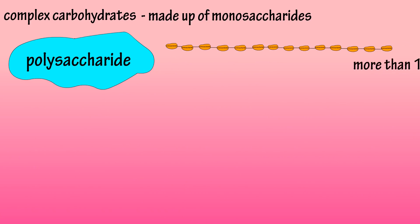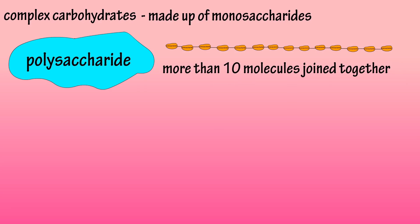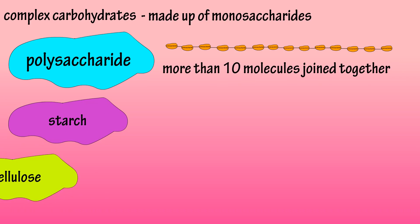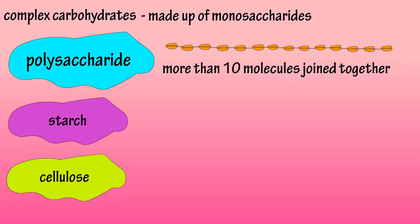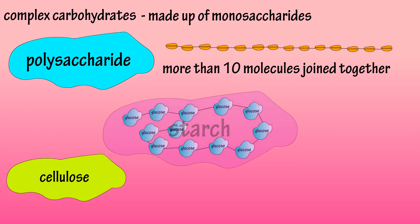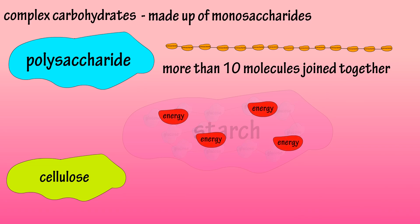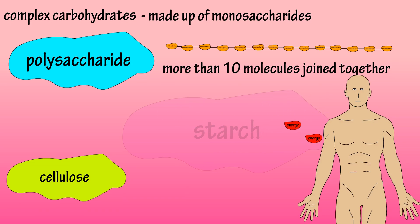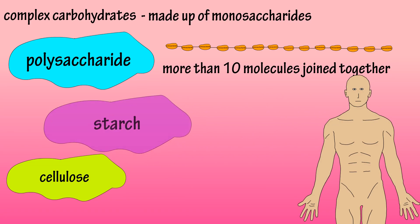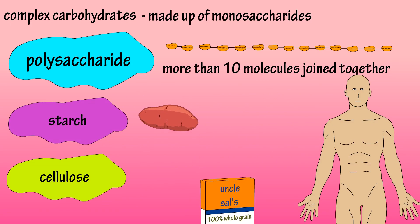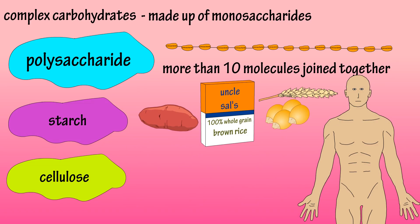Polysaccharides consist of more than 10 simple sugars joined together. Starch and cellulose are two of the main polysaccharides. Starch consists of many glucose molecules joined together, and the body can break them down and use the glucose for energy. Starchy foods include potatoes, rice, wheat, and corn.